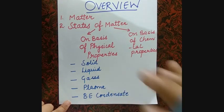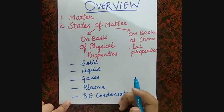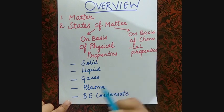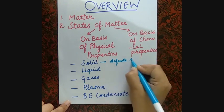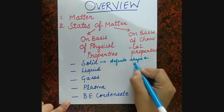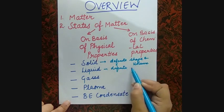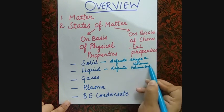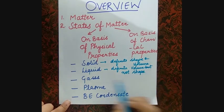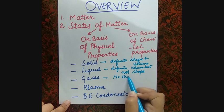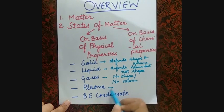Liquids have definite volume but not definite shape. Gases have no definite shape and no definite volume. There is another state — plasma — which we have already talked about.